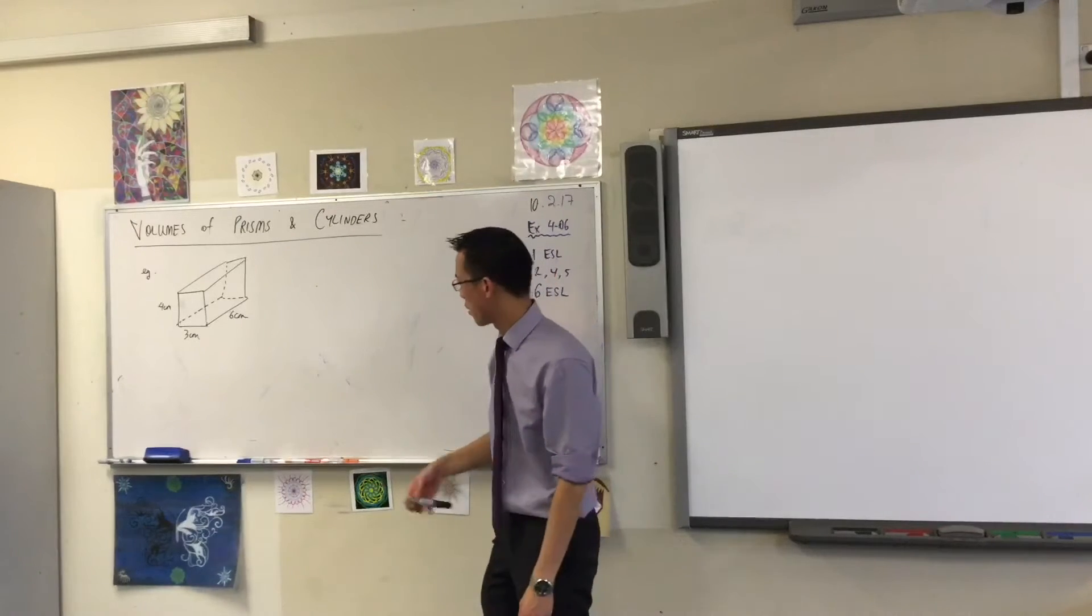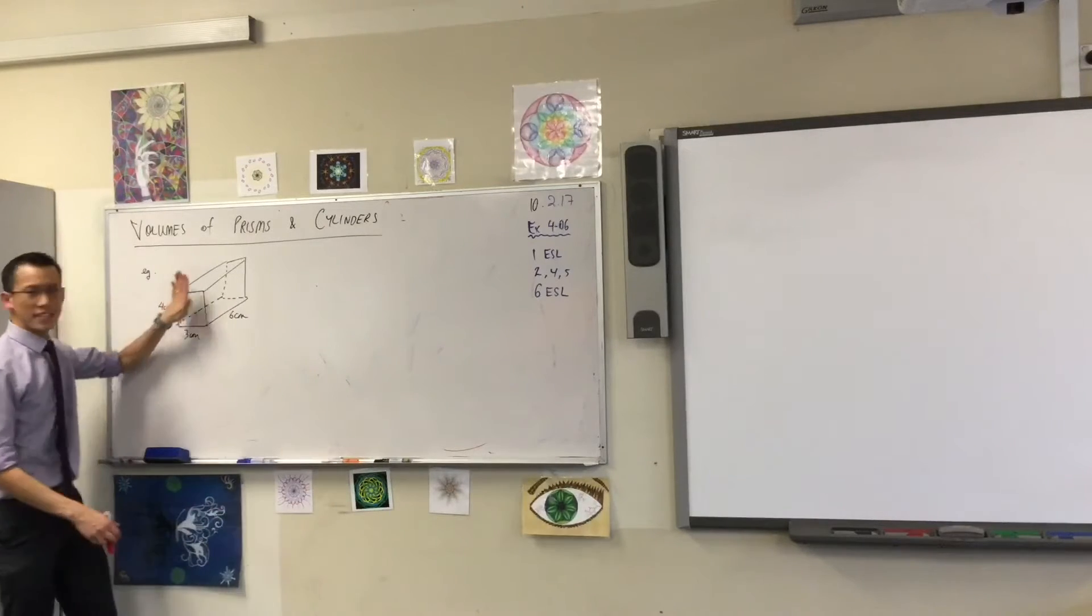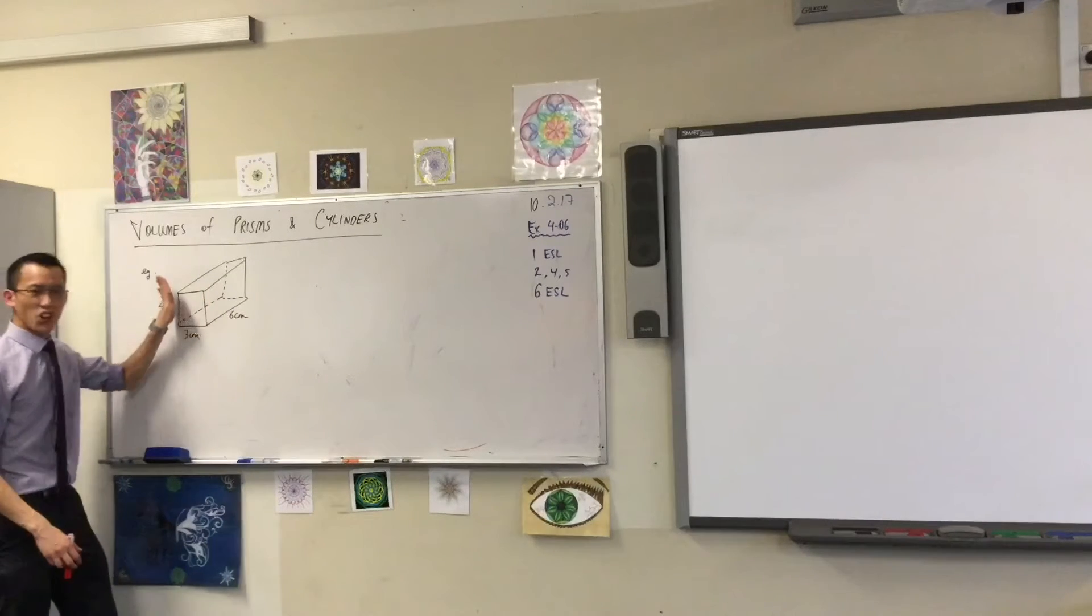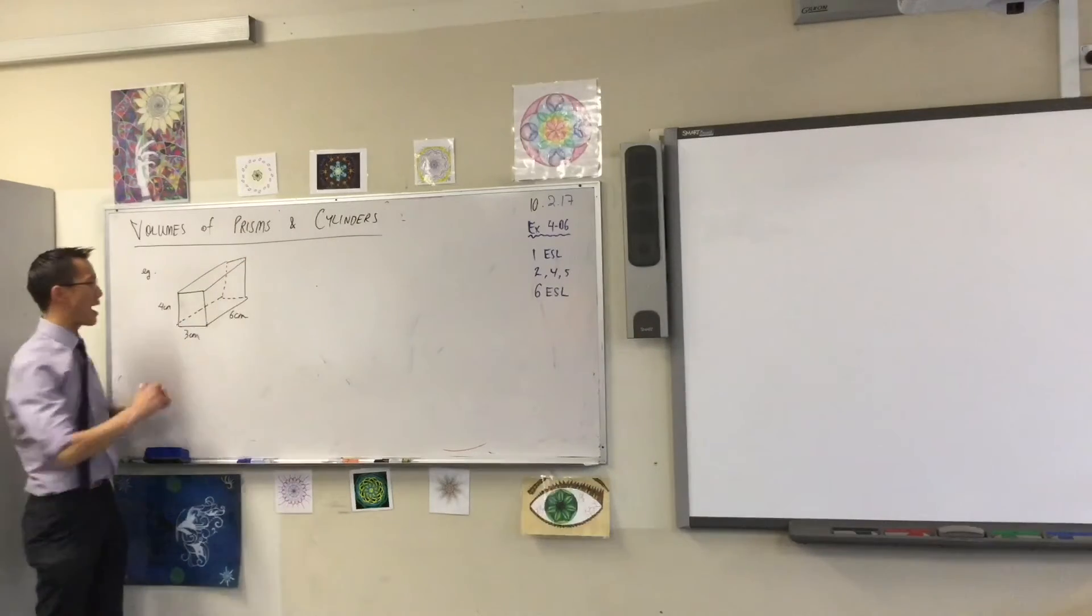Now in this case, it's actually really simple because if you recall, and if you have another color, that would be really useful. What you've got is this rectangle on the front copied over and over and over again, like slices of bread, all the way back.